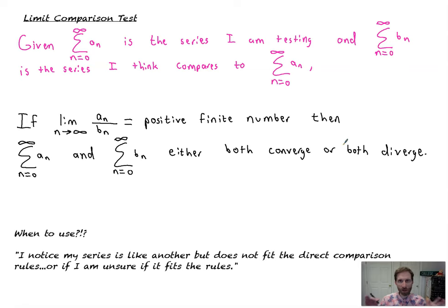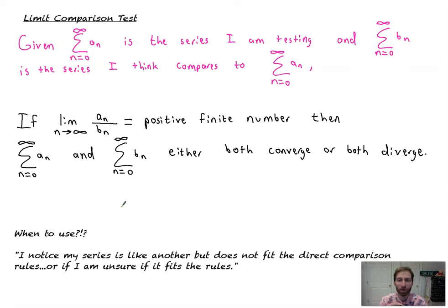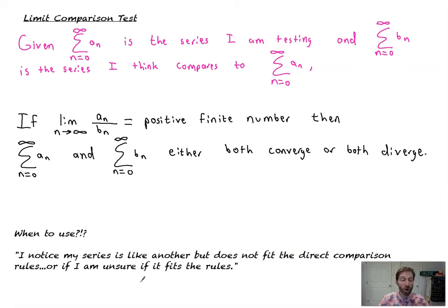So when do I use this? What this is basically all about is: what happens if I have a series that I think is a lot like a converging series, but it's actually more than it — it's greater than it? Remember, in direct comparison, you have to be less than a converging series to converge. What happens if it's more than converging, or you're not really sure if it's more or less? Then the limit comparison test is the answer. I noticed my series is a lot like another series, but it does not fit the direct comparison test rules, or I'm unsure if it does — then use the limit comparison test to be safe.